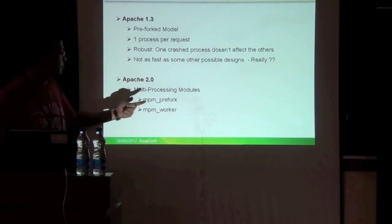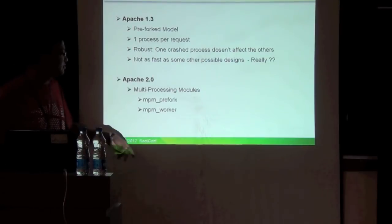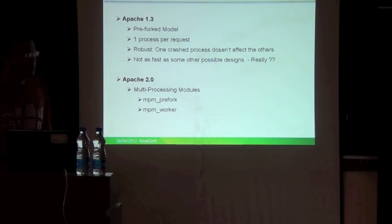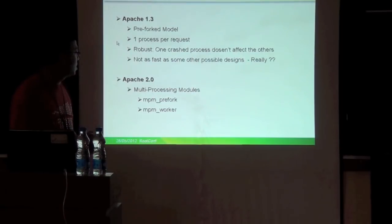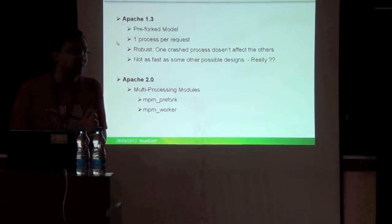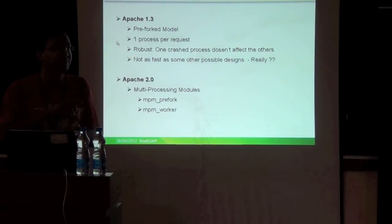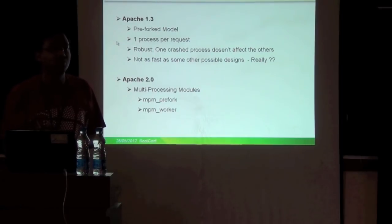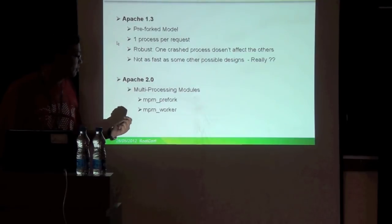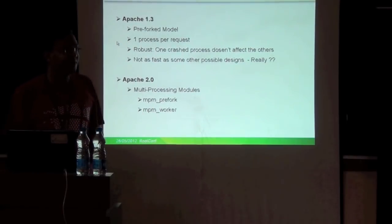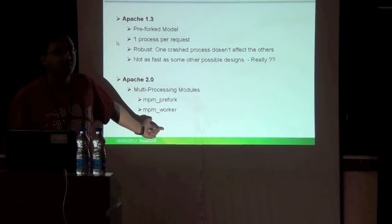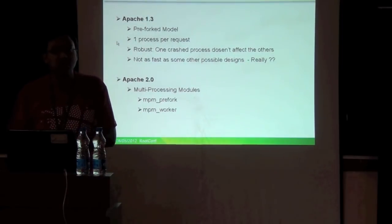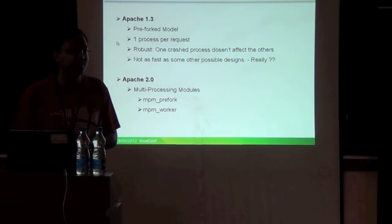Apache 2.0 introduced the concept of multi-processing modules. The commonly used ones are MPM prefork and worker. Prefork is the same as 1.3 — a new process is spawned for every request. The MPM worker starts with a small set of processes and every process maintains a thread pool; each request is handed over to one of those threads. The problem with MPM worker is that some PHP libraries are natively not thread-safe, and even PHP does not recommend using the MPM worker model. If you start doing it, you might run into memory access exceptions from PHP.